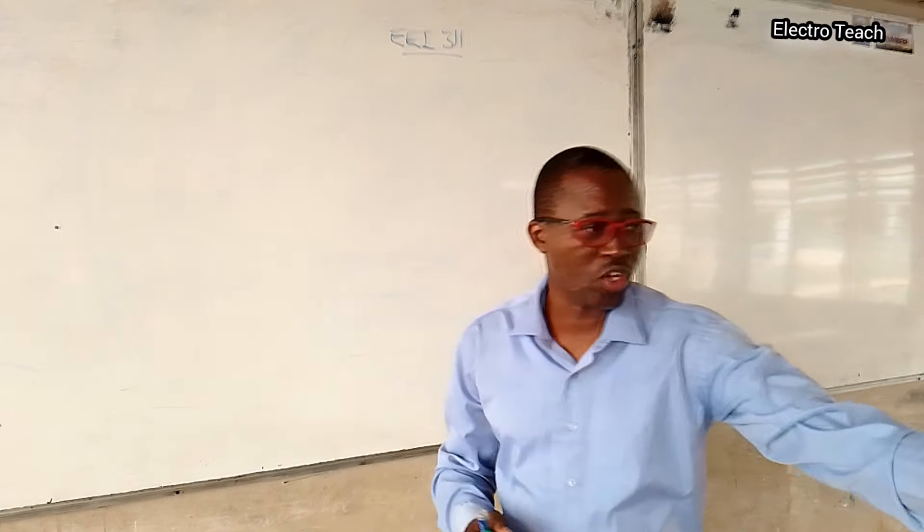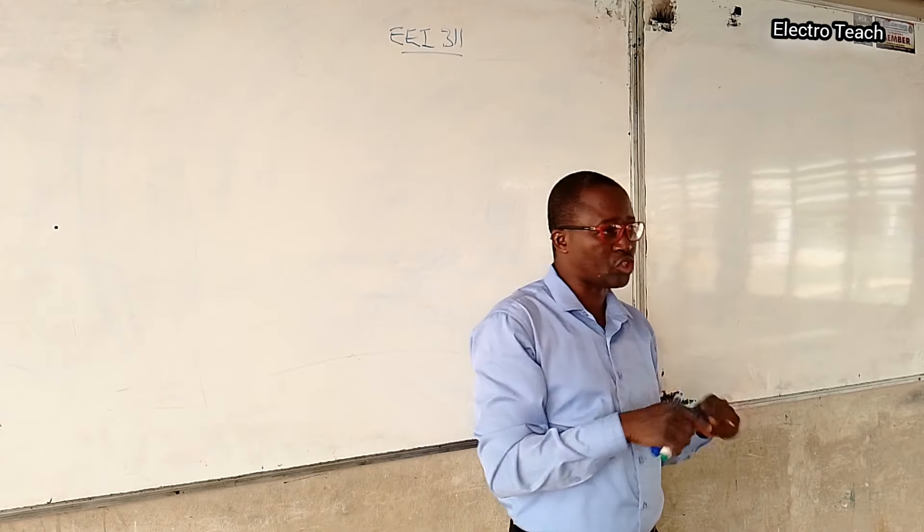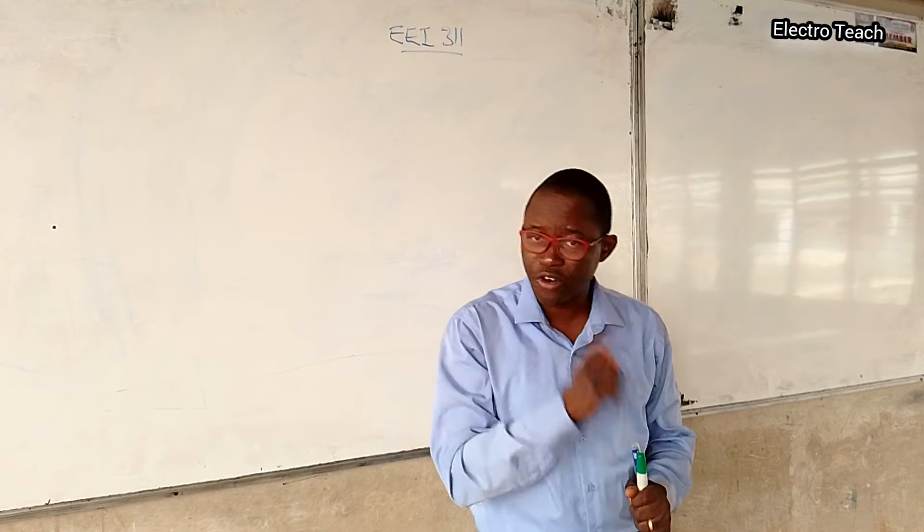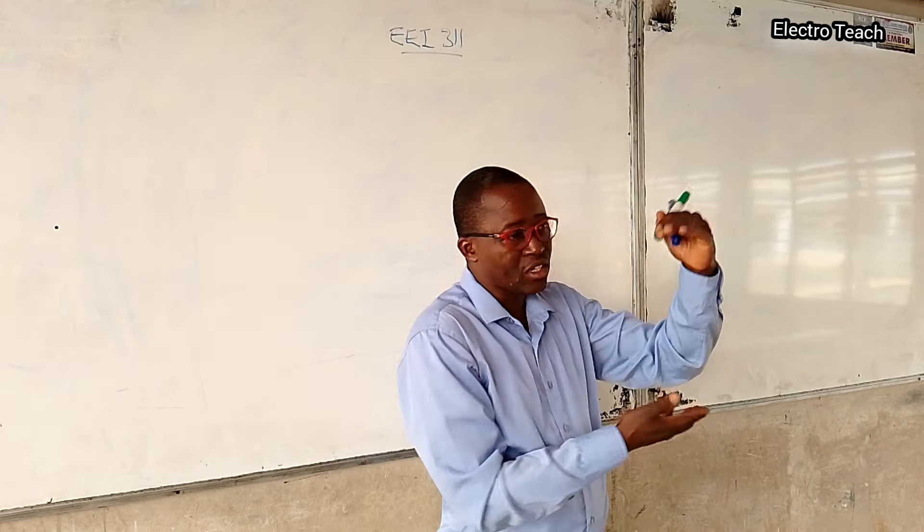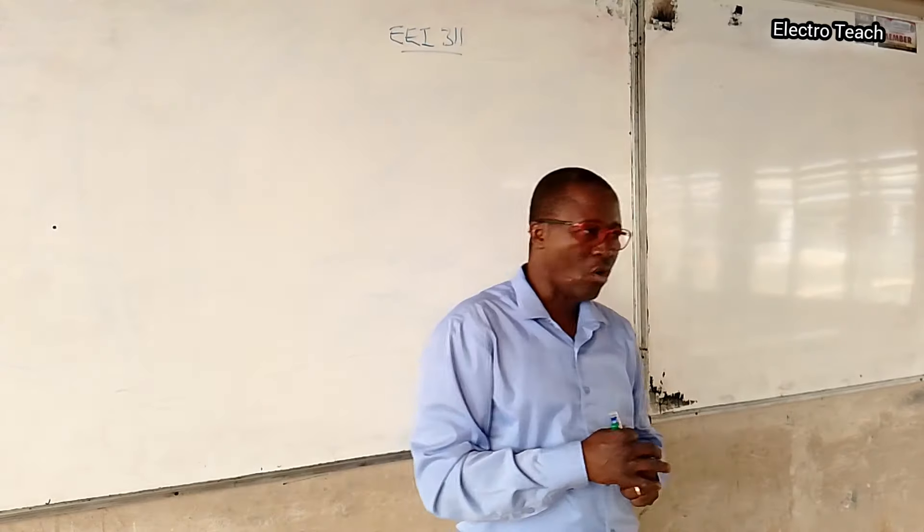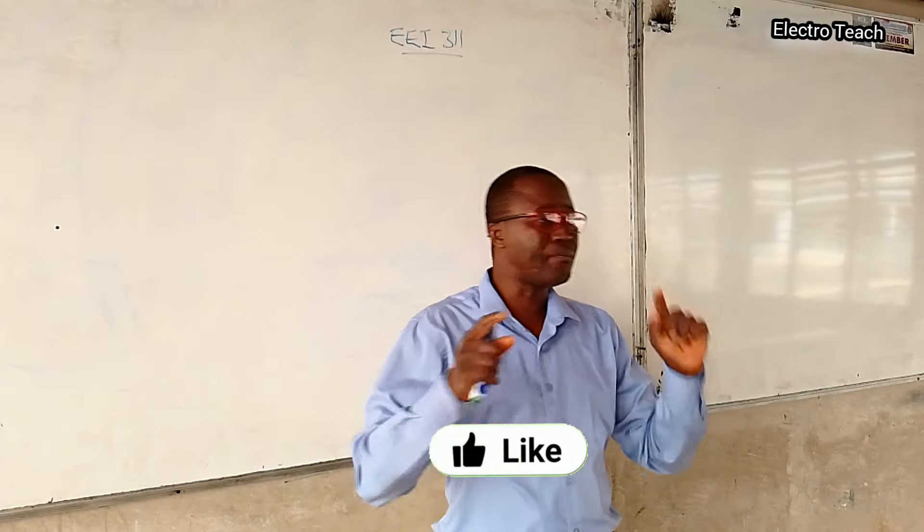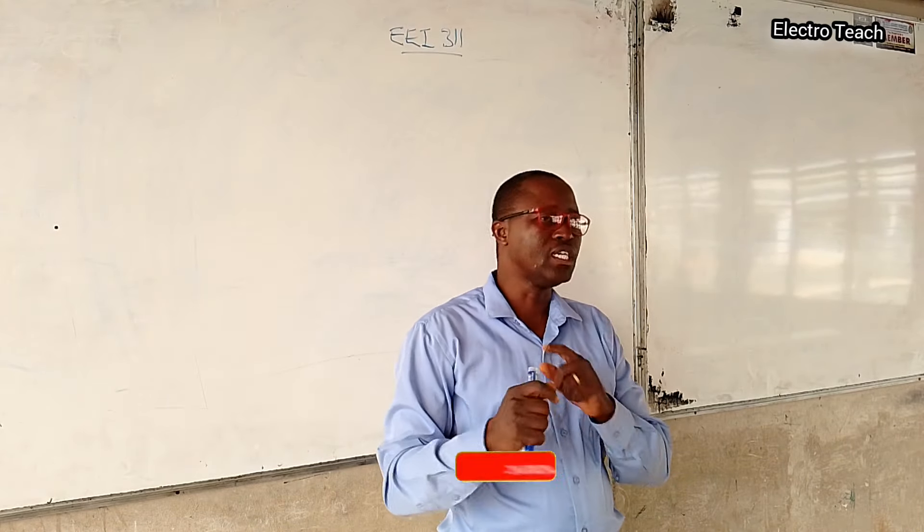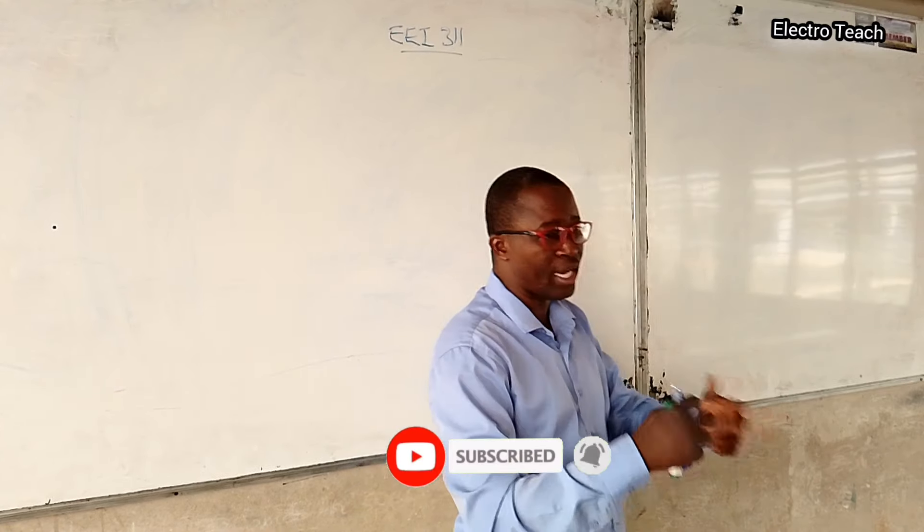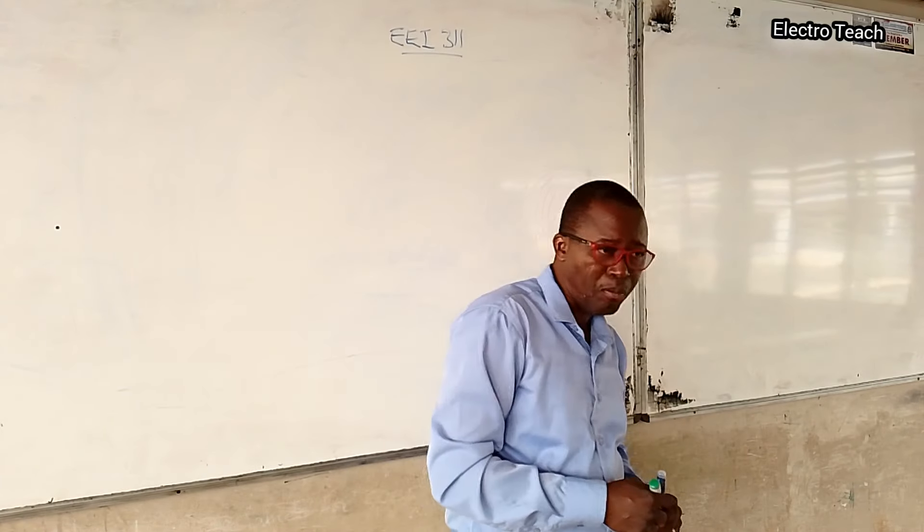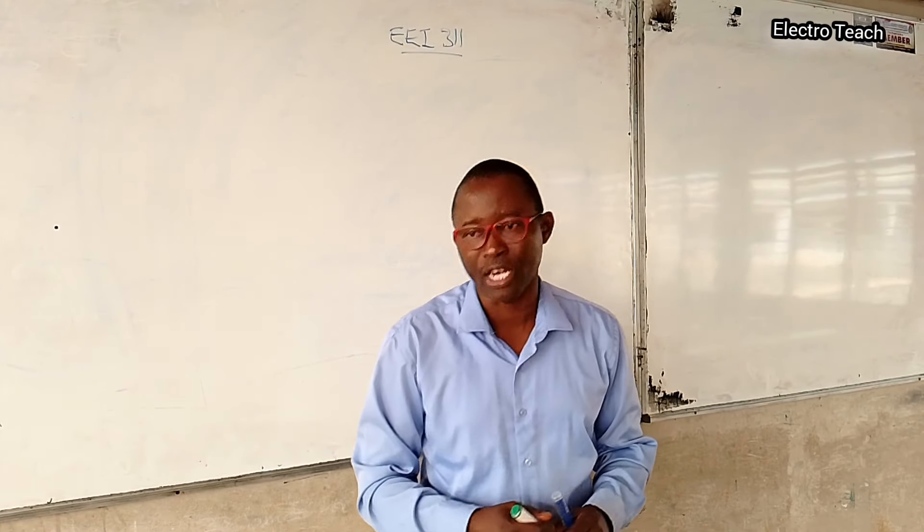And that is where it will sense the temperature we are going to measure. Then we have a controlled junction, a temperature controlled junction, where we have a reference temperature. So whenever there is a temperature difference between the sensing junction and the controlled junction, EMF will be liberated at the two ends of the wires. So the heat energy, the variable, will be converted to electrical energy.